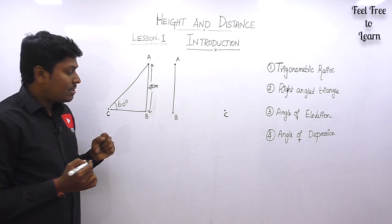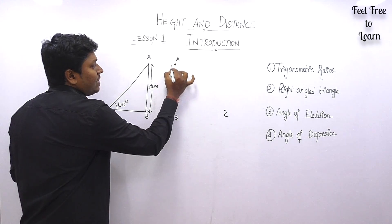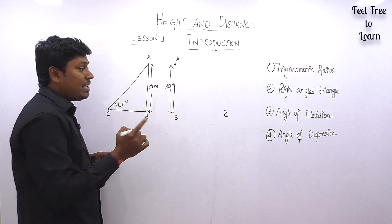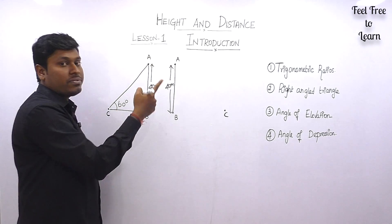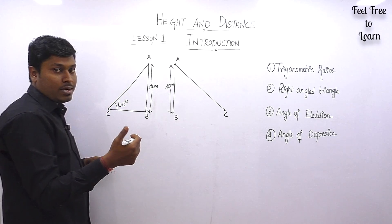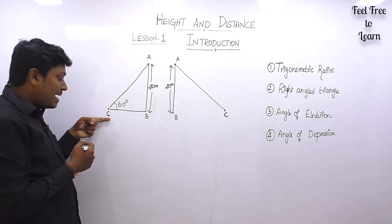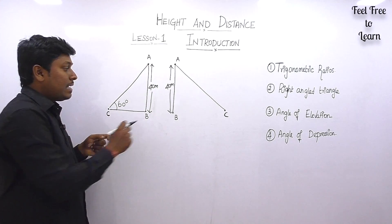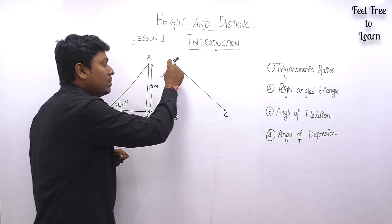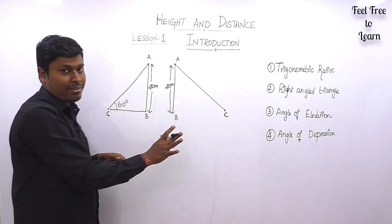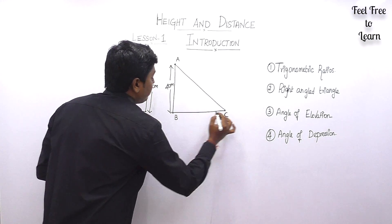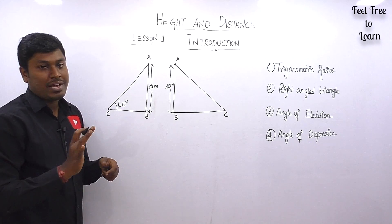Angle of depression is the opposite case. Here, a man is standing at the top of the tower and looking at an object at the ground level. When the man looks downward at the object, that angle is called the angle of depression.